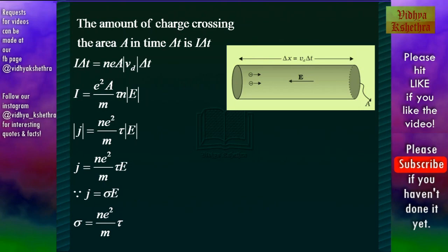So I = e²AE/mτ × n. Substituting the value for drift velocity. Now I/A = j, current density.